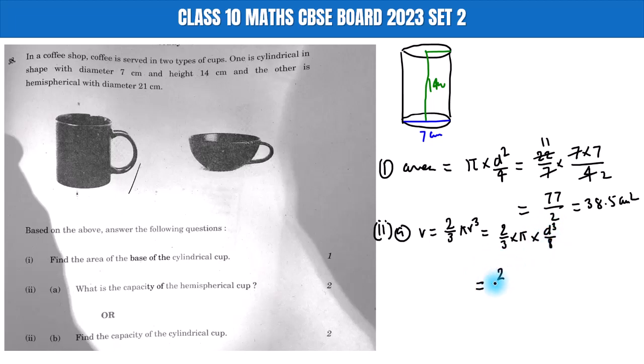Substituting values: (2/3) times (22/7). The diameter is 21 cm, so d³ = 21 × 21 × 21, divided by 8. Simplifying: 7 cancels from 21, giving (2 × 11 × 21 × 21)/8. Further simplifying: 11 × 21 × 21 divided by 4, which equals 2425.5 cm³.